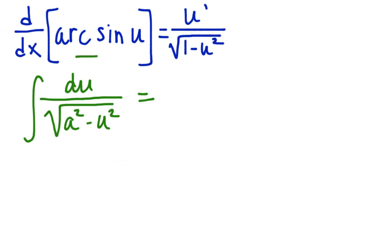if I'm talking about arc sine and taking the derivative of arc sine — getting u prime over the square root of 1 minus u squared — then in my integrand I'm going to look for a pattern where I have u prime, or du, all over the square root of a squared minus u squared, where a is just a constant. And what do you think that's going to equal?